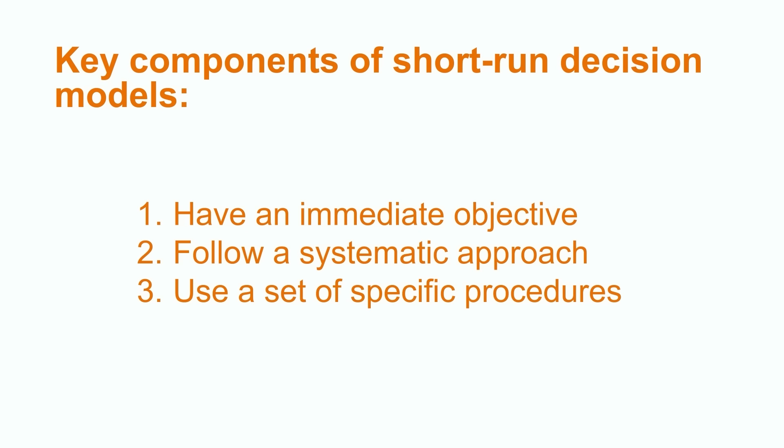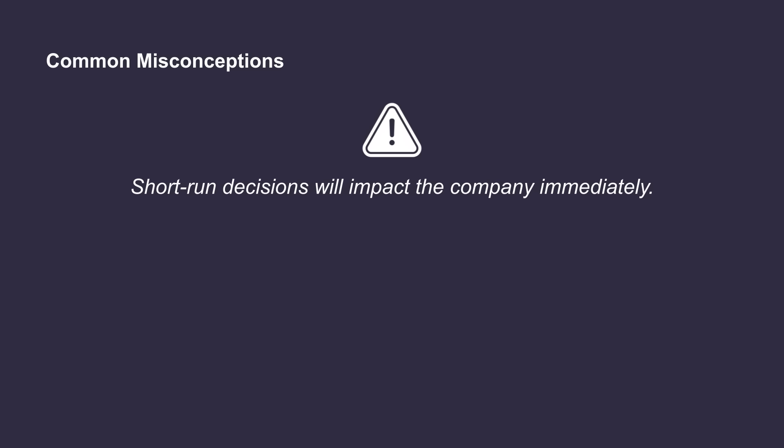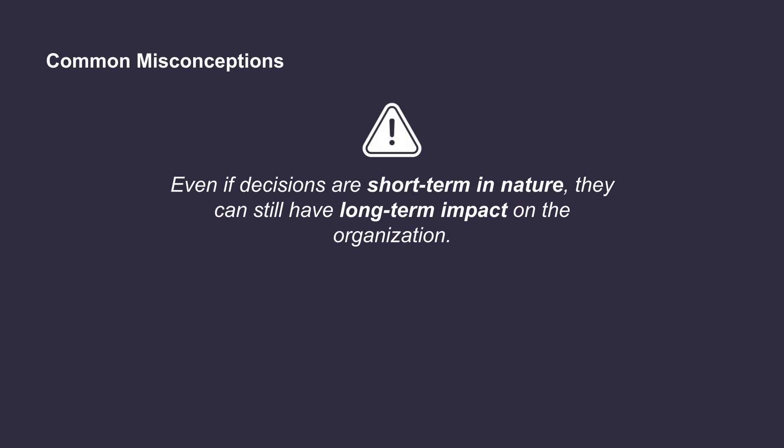A decision model helps companies organize information using a set of specific procedures to ultimately lead them towards landing on appropriate decisions. We'll explore a specific decision-making model in a minute. But before we do that, let's talk about a common misconception. When we say short-run decisions, we're definitely talking about decisions that will impact the company immediately. However, it's important to realize that while these decisions are short-term in nature, in many cases they can still have a long-term impact to the organization.